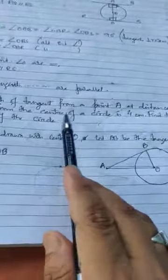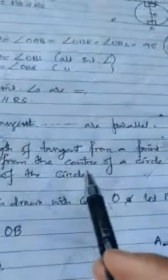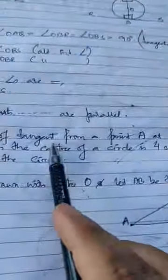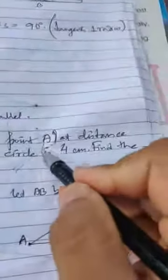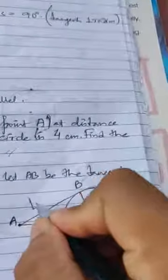The length of tangent is four centimeters. So the length of tangent from point A is four centimeters. Let me label this - suppose this is four centimeters. The length of tangent from point A to B is four centimeters.